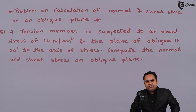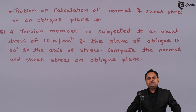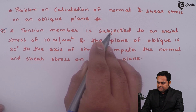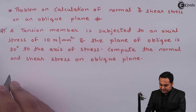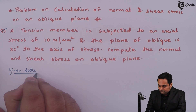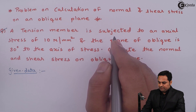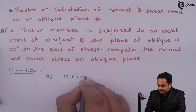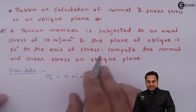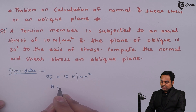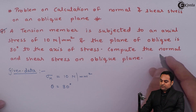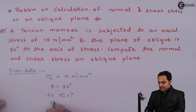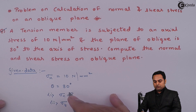Hello friends. In this video we will see a problem on calculation of normal and tangential stresses on an oblique plane. A tension member is subjected to an axial stress of 10 Newton per mm square — I'll write it in the data as Sigma X, assuming it to be in the X direction: 10 N/mm². The plane of oblique is inclined at 30 degrees to the axis of stress, so theta equals 30°. We have to compute the normal and shear stress on the oblique plane.